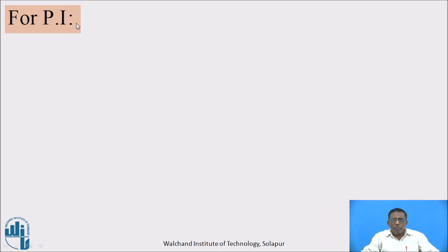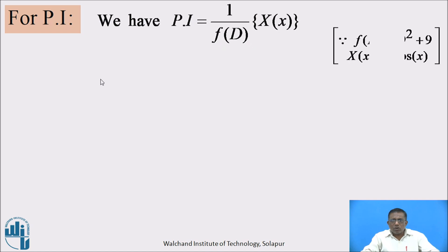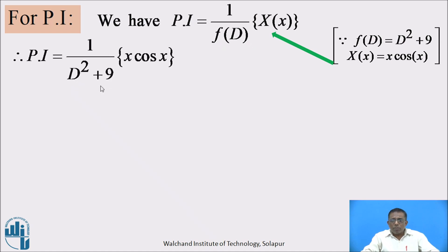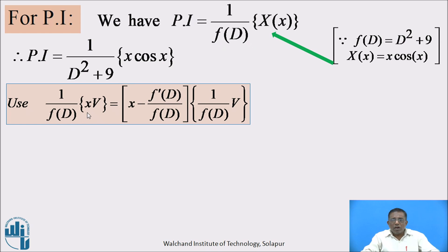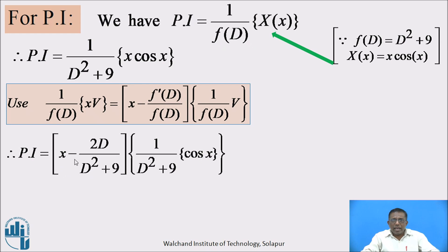Now, particular integral PI = 1/f(D) operated on X(x). Substituting values: PI = 1/(D²+9) operated on x·cos(x). The function is of x·v type where v = cos(x). Therefore we use: 1/f(D) operated on x·v = [x - f'(D)/f(D)] times 1/f(D) operated on v. So PI = [x - 2D/(D²+9)] times 1/(D²+9) operated on cos(x).